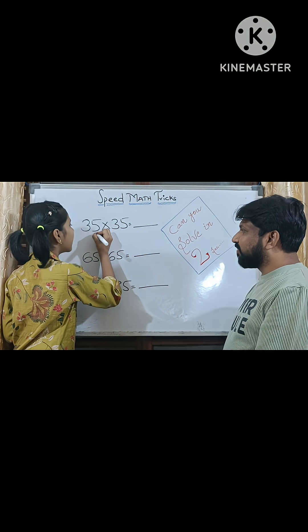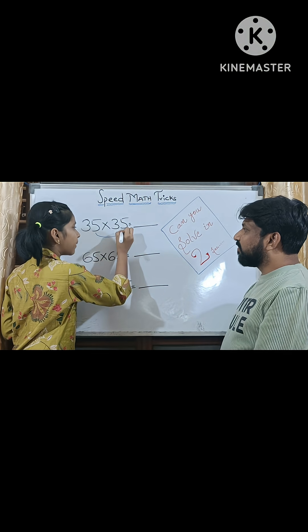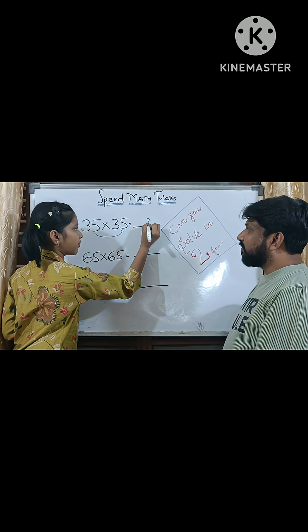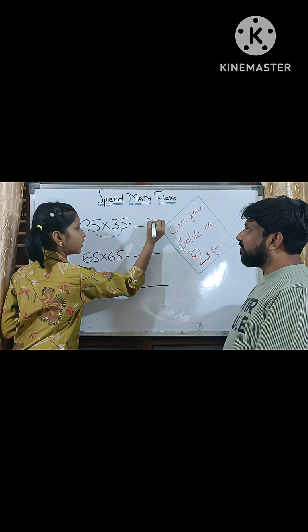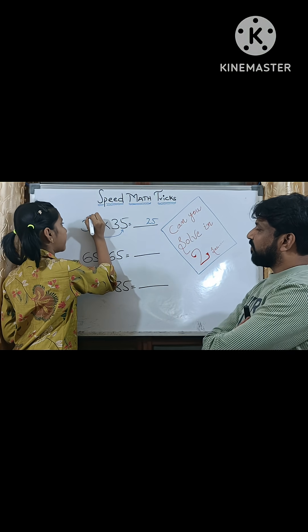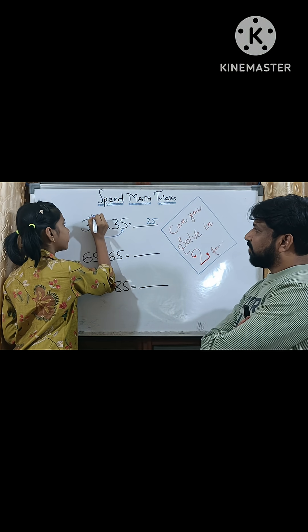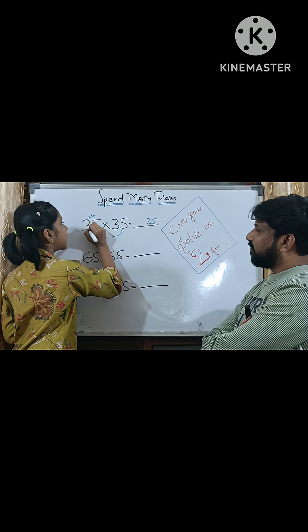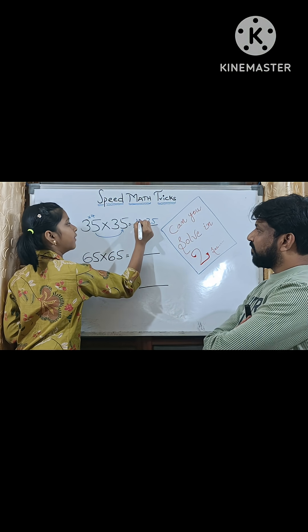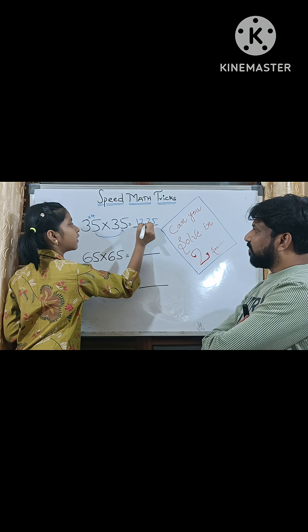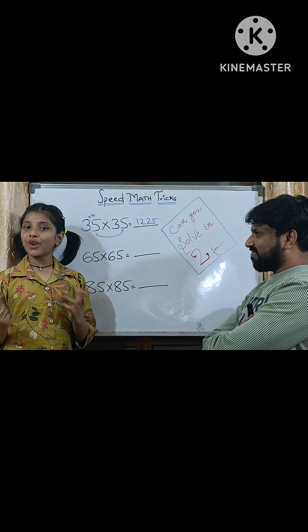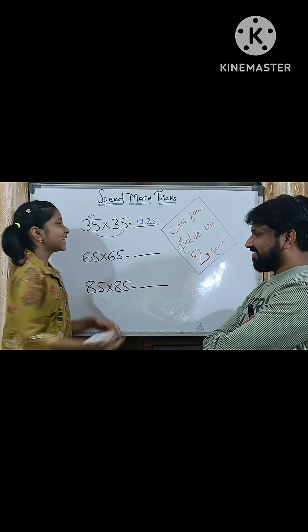Yes Dad. 5 multiplied by 5 is 25. The number after 3 is 4. 3 multiplied by 4 is 12. 1225, that's it.